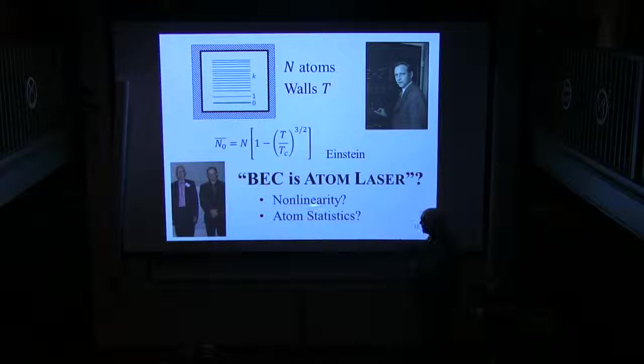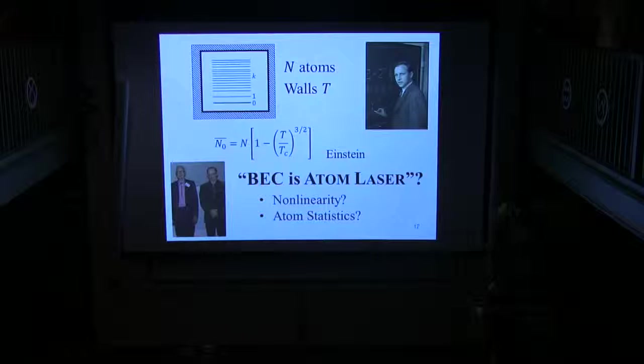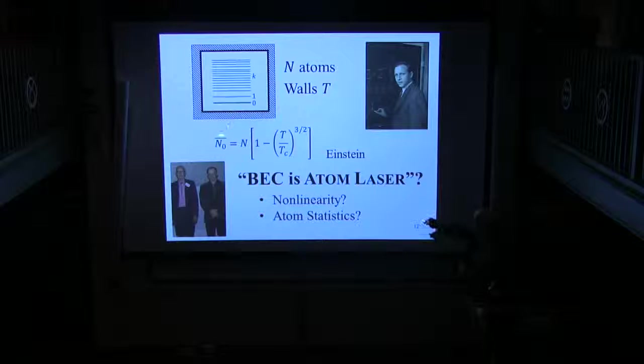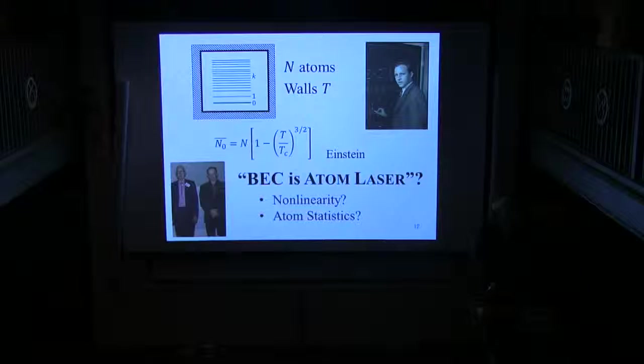Second question. Well, if there is a BEC, what is the atomic statistical distribution? What's the probability of finding n zero atoms in the ground state? The third point, as Pierre mentions, he says, if there is an atom laser, I want one that emits gold atoms, right?